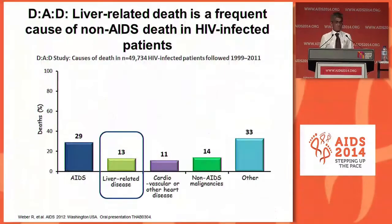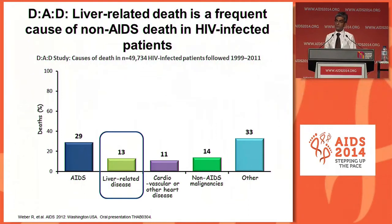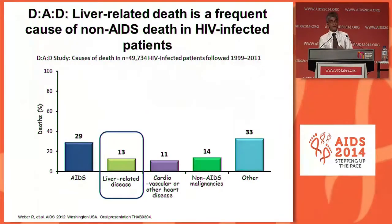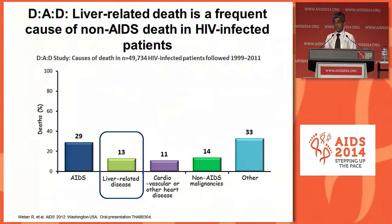Liver disease is an important cause of morbidity and mortality in our group of patients. Data from the DAD cohort suggests that as more people are placed onto antiretroviral therapy, the impact of liver disease in terms of causing morbidity and mortality is increasing. Much of this is associated with hepatitis B and hepatitis C co-infection.